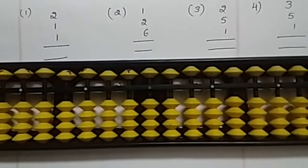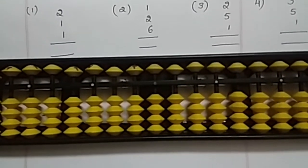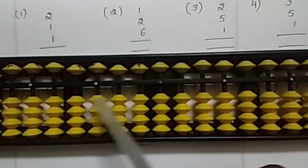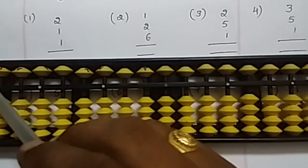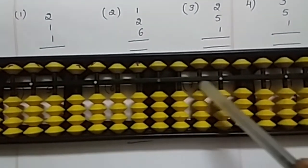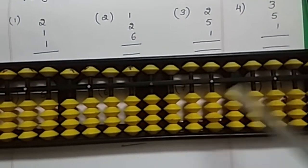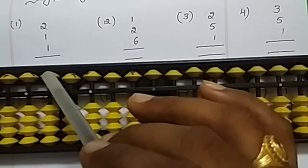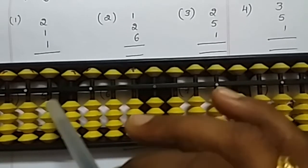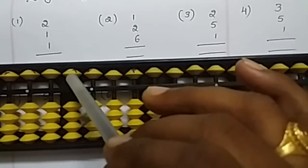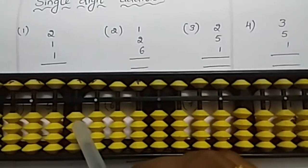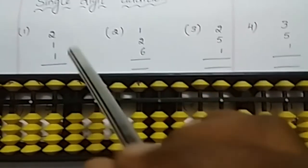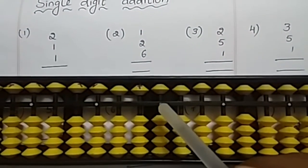We already know that this is a beam or central bar. These are all upper beads, these are all lower beads. The value of each upper bead is 5, the value of each lower bead is 1. Here is the first question, question number one. First we have to start from the midpoint.